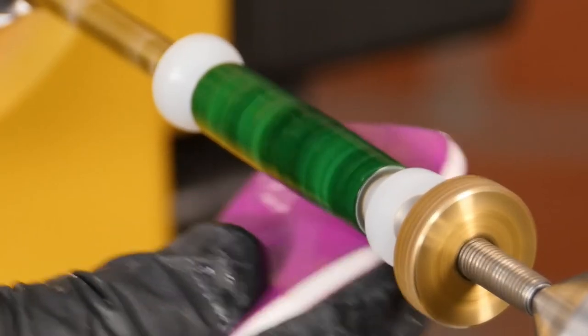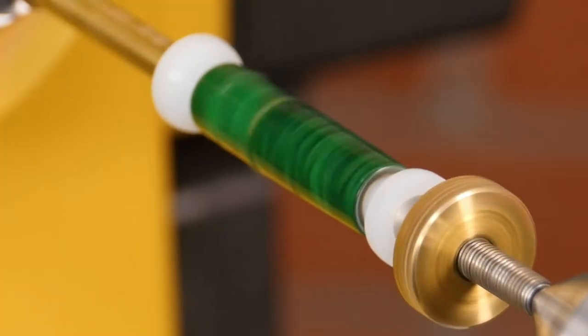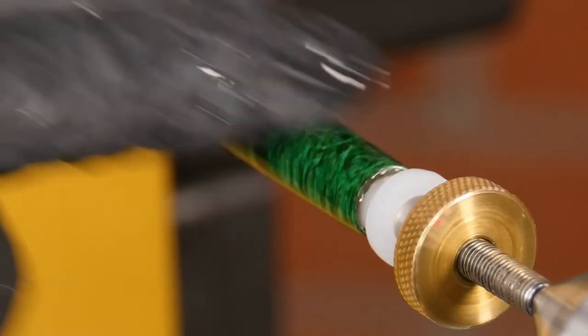The blank will become clearer as you go and the last few grits will polish it to a very high gloss. Work your way through wet sanding with all of the grits, ending with a superfine 12,000 grit.